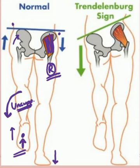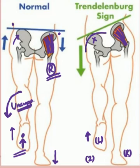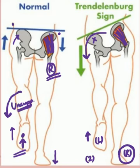Now consider a pathological condition where the abductors are not working properly. The right side is again on the ground and the left side is off the ground. If the abductors are weak, the abductor mechanism cannot keep the opposite pelvis at the same level, and therefore it will droop down. This is what we call the Trendelenburg sign.